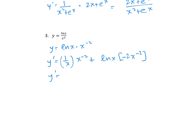I'll move the x in the denominator to the numerator, giving x to the negative 3, minus 2x to the negative 3 times ln(x). I'll common factor out x to the negative 3, and that gives the simplified result.